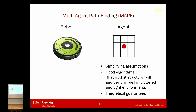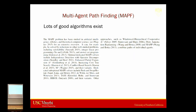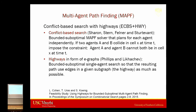We now have algorithms that perform well in cluttered and tight environments for hundreds of robots, and they give you theoretical guarantees — they're bounded suboptimal. They don't quite work in real time; for 200-plus robots we might need 20 to 30 seconds of planning. But we are getting there. These algorithms are becoming more and more powerful. There are a lot of them — you'd have to look into paper related work sections, as many people have worked on this.